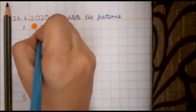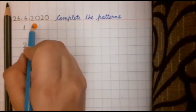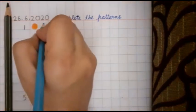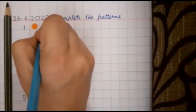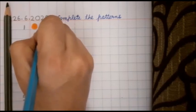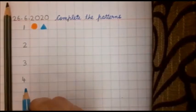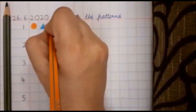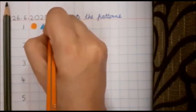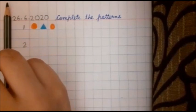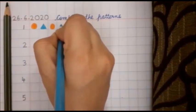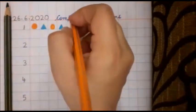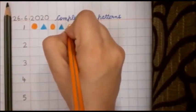Now see what ma'am will draw in the next box. Pahle square box mein ma'am ne orange circle banaya. Now we will come to the next box. See what ma'am is going to draw. What shape is this? What is this? This is a triangle. Now again ma'am will draw orange circle. Then blue triangle.